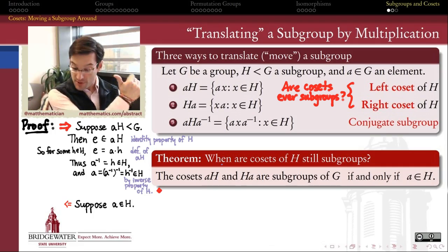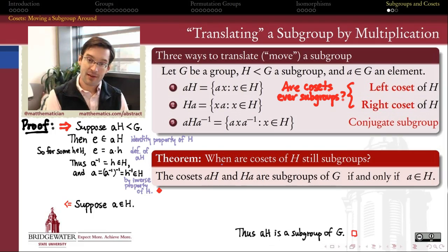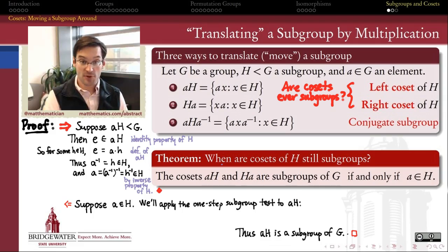So now let's establish that backwards direction. Let's assume that A is an element of H. What we want to do is prove that AH is a subgroup of G. So how are we going to do that? Well any time our burden of proof is show such and such is a subgroup, I like subgroup tests. So let's apply the one-step subgroup test to see why this must be true. The one-step subgroup test applied to the subset, the coset, AH.